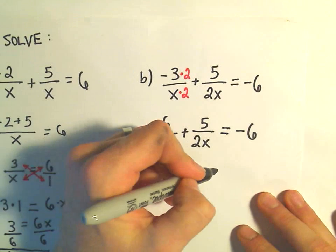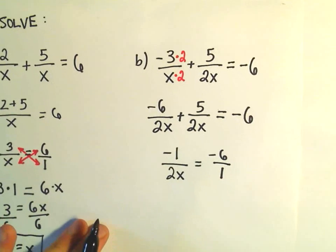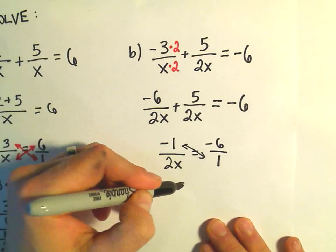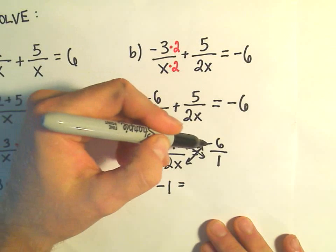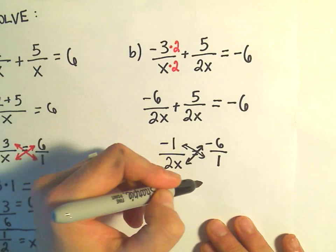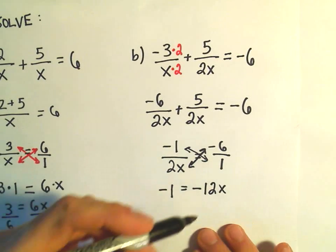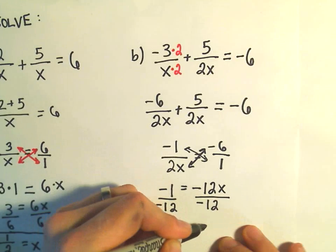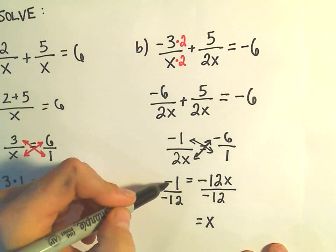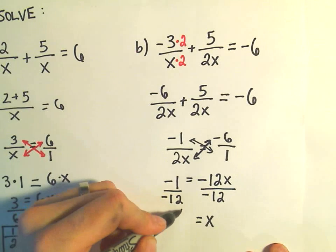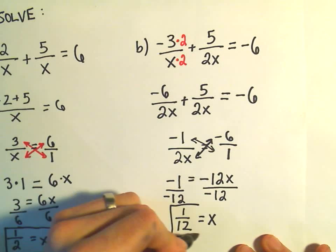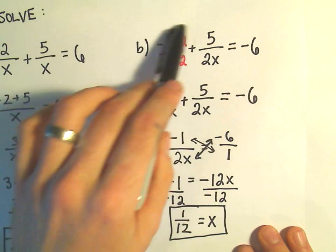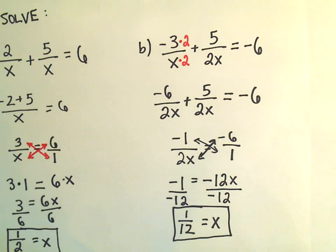Writing the right side as negative 6 over 1, we cross multiply: negative 1 times 1 equals negative 1 on one side, and 2x times negative 6 gives negative 12x on the other. So we have negative 1 equals negative 12x. Dividing both sides by negative 12, a negative over a negative is positive, giving us x equals 1 over 12. Plug x equals 1/12 back into the original and the left side gives negative 6, confirming the solution.